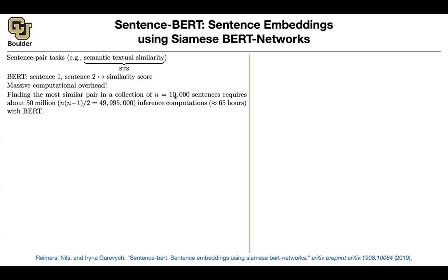Let's say you have 10,000 sentences and your task is to find the most similar pair among those 10,000 sentences. You're going to choose two out of N, keep choosing pairs of sentences, push them through BERT, and that's going to give you a similarity score. BERT is a huge model, and that's going to take approximately 65 hours to solve that problem.